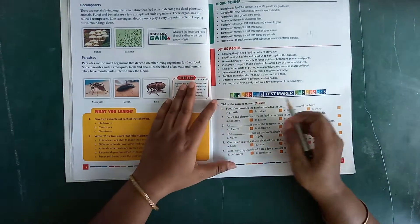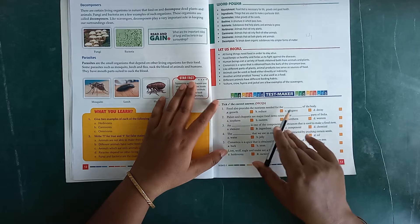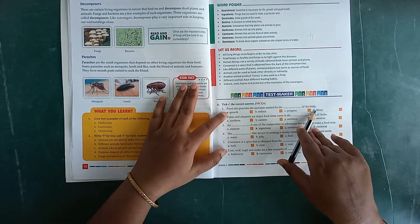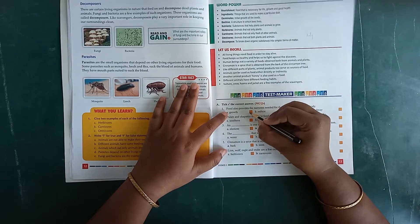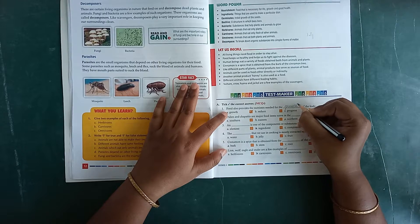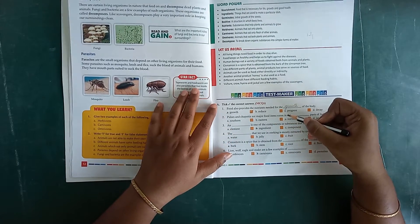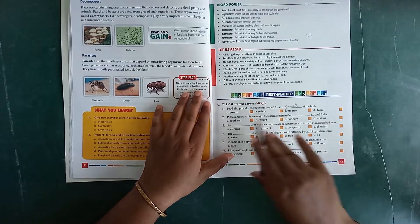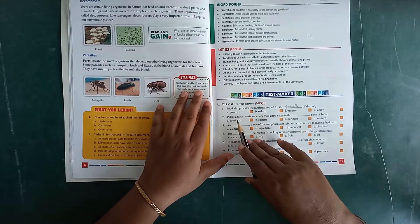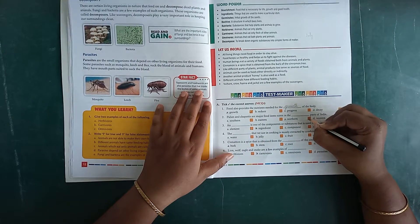Tick the correct answer. Number 1. Food also provides the nutrients needed for the dash of the body. A. Growth. B. Reduce. C. Progress. Or D. Decay. It's A, Growth. Tick it here and we also write down growth, G-R-O-W-T-H. Then number 2. Pulses and chapatis are major food items eaten in the dashed parts of India. A. Southern. B. Eastern. C. Northern. And D. Western. Pulses and chapatis are major food items of which part of India? It's northern. C. Northern. Write N-O-R-T-H-E-R-N, Northern.